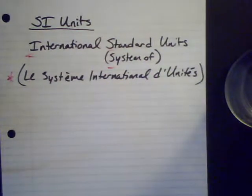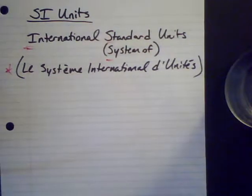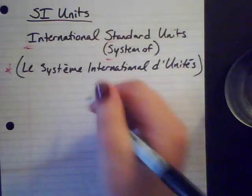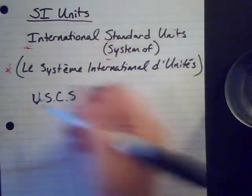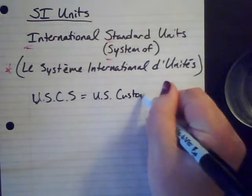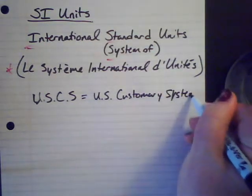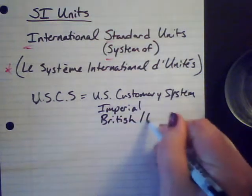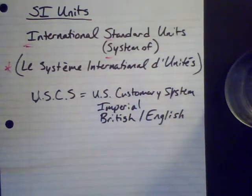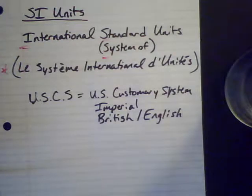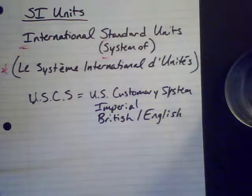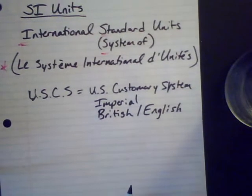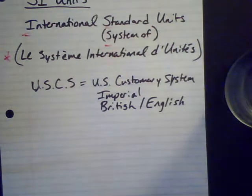SI units are the units we use to measure different things. Here in the U.S. we use a different, outdated system called the U.S. Customary System, or USCS, also known as the imperial system or British system. There are only two other countries in the entire world that use this same system: Liberia and Myanmar. In fact, even Myanmar is working on getting rid of it.